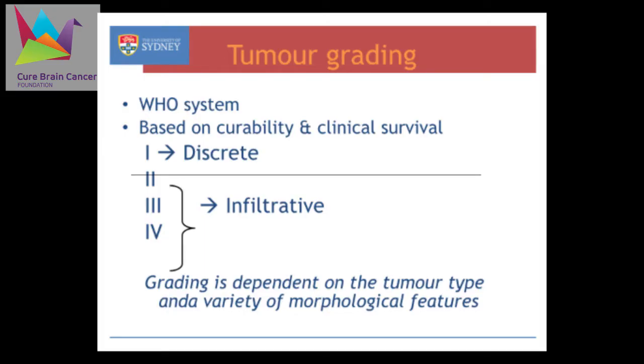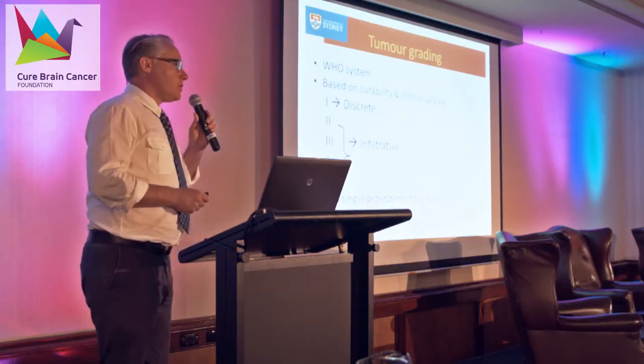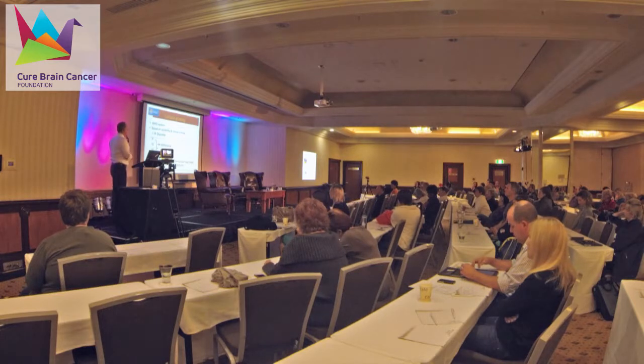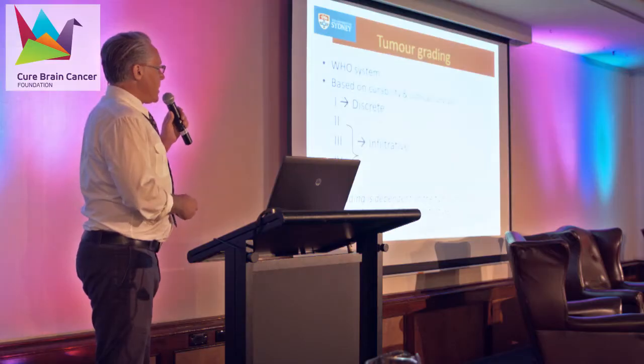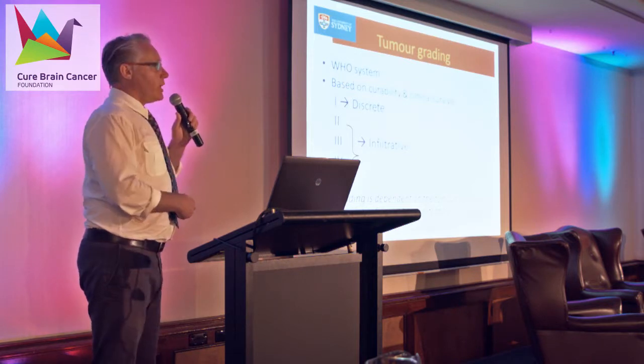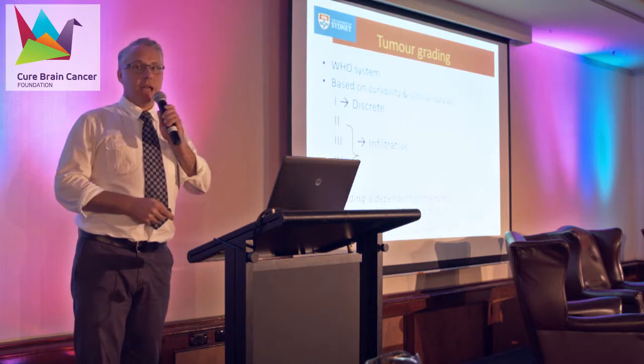Once we know what sort of tumour it is, we then have to grade it. We use the WHO grading system which has four levels, and it's based on curability and clinical survival. Grade one tumours are discrete and can be cut out — if cut out completely, they won't come back, so essentially they can be cured. Often they are grade one, but because of their location they can't be cut out completely and have to be managed in other ways. Then we have increasing grades of malignancy — two, three, and four — which are more infiltrative, much harder to cut out and often need adjuvant therapy.